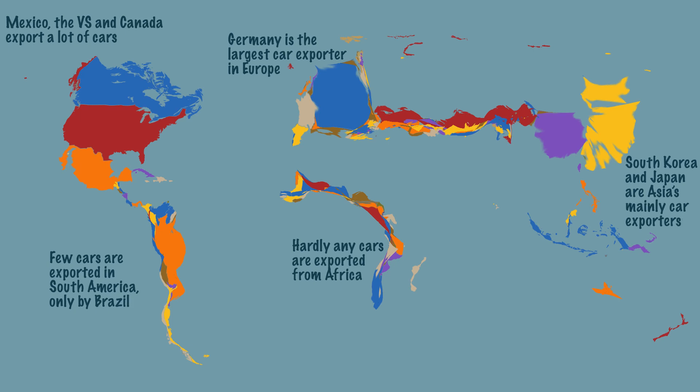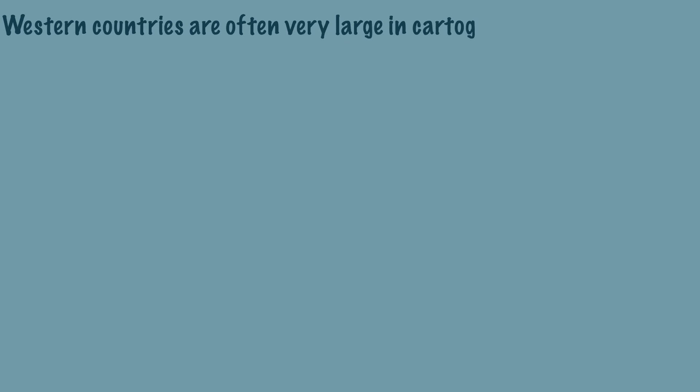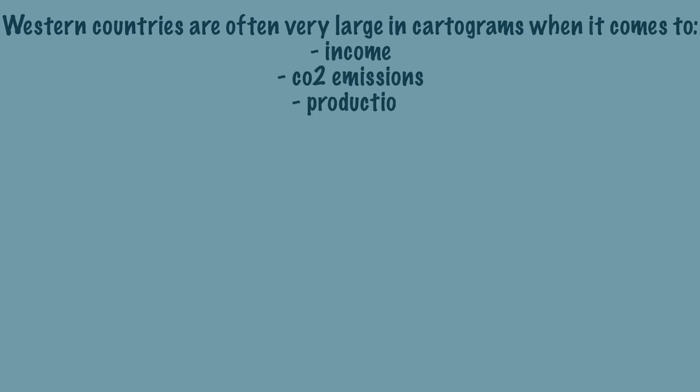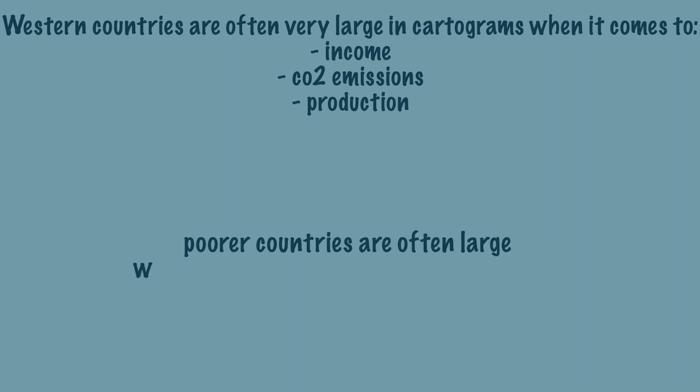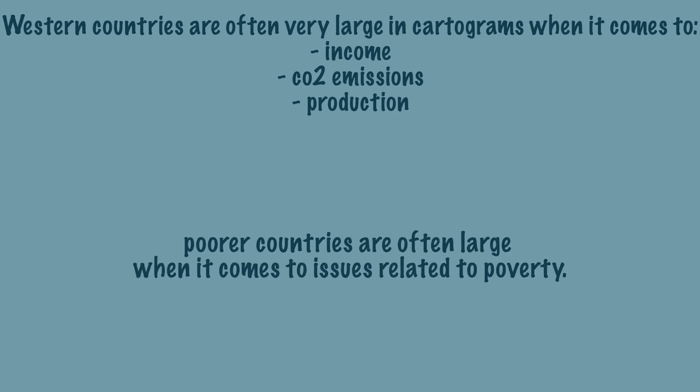Western countries are often shown as very large when it comes to income, CO2 emissions, and production, while the poorer countries are often large when it comes to issues related to poverty. A major advantage of the anamorphosis map is that the image is often so distorted that you can easily remember it.